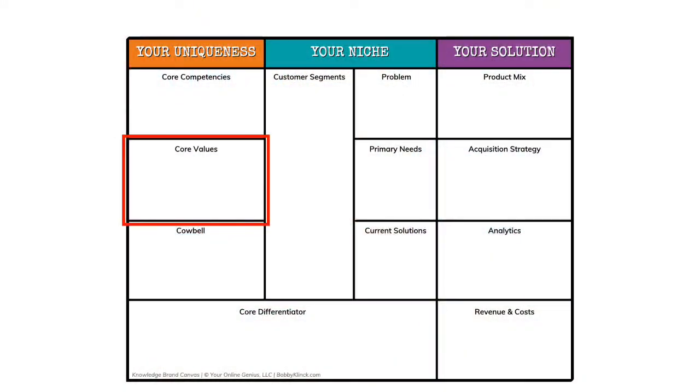Hey there, welcome back to the Badass Business Planning course. We're still in Module 2 where we're talking about your uniqueness. And here in Lesson 3, we're talking about your core values. On the canvas, this is the second box in the Your Uniqueness area.